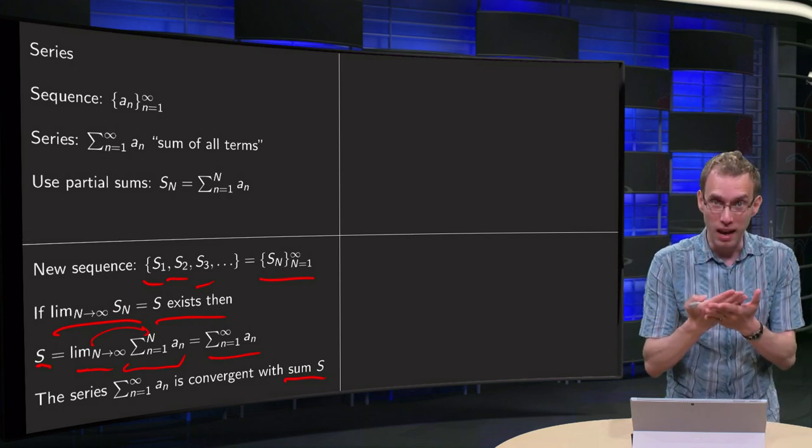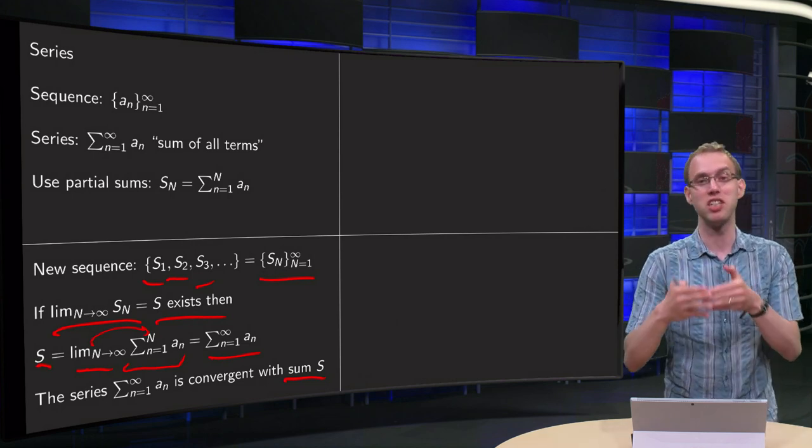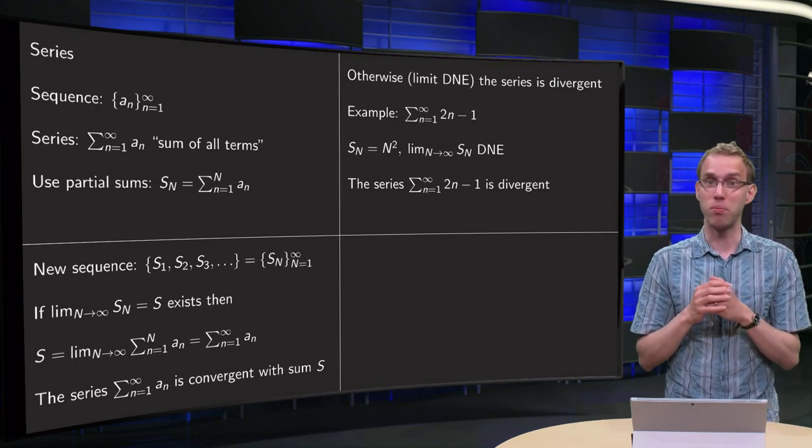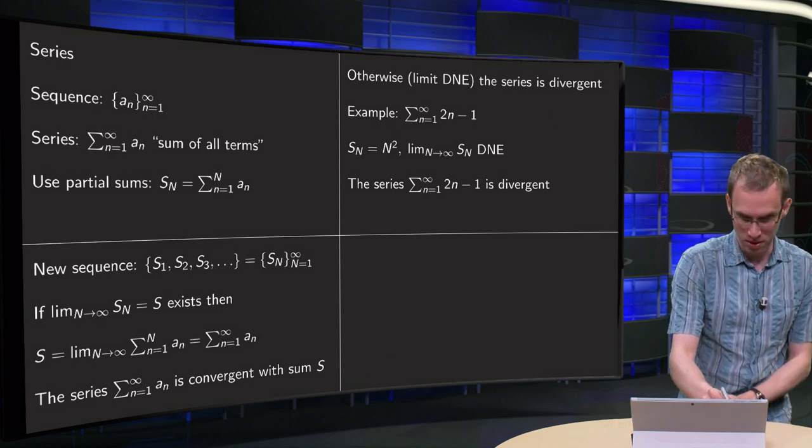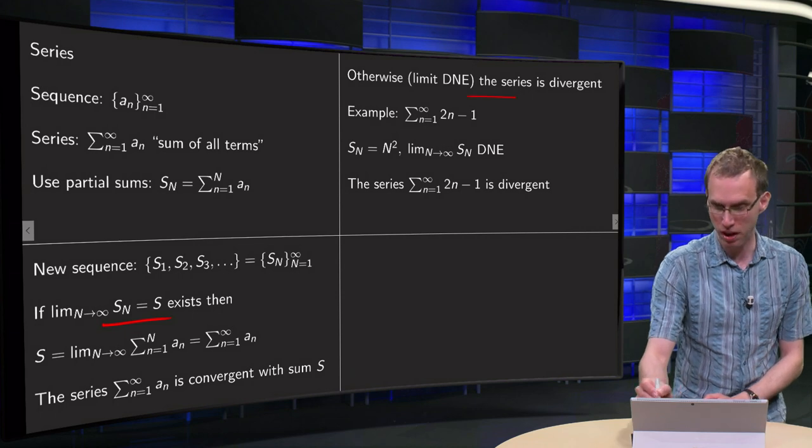First compute the S_N, form a new sequence, take a limit of the sequence, and if the limit exists, then the sum exists. You see that is kind of complicated. And if this limit does not exist, it is also possible, the limit over here does not exist, then the series is said to be divergent.